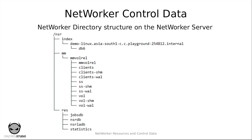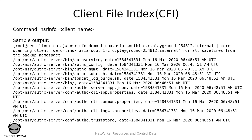We will look at each of these folders individually and see what each of those folders store. Under res you would see multiple other folders as well: the jobs DB, the NSR DB, and the NSR LA DB. The jobs DB and the NSR DB are essentially the server components. The NSR LA DB is a database common to the NetWorker client and would be present in most NetWorker installations; however, it will be discussed in a later video.